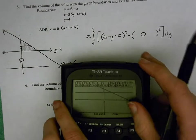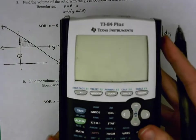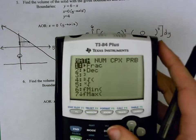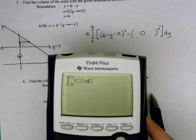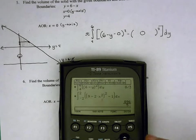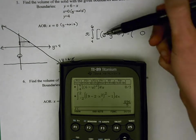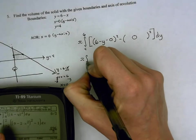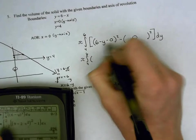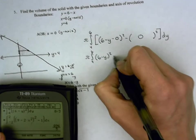If you go into your home screen, 84s, you'll hit math. You'll hit math, and then you'll scroll up to number 9, fn int, and it'll give you a very nice little integral to plug into. 89s, you'll hit F3, number 2. We'll plug in our function. In this case, I'm actually going to clean this up just to facilitate plugging it into my calculator. This actually just is 6 minus y squared, and minus 0 has no impact.